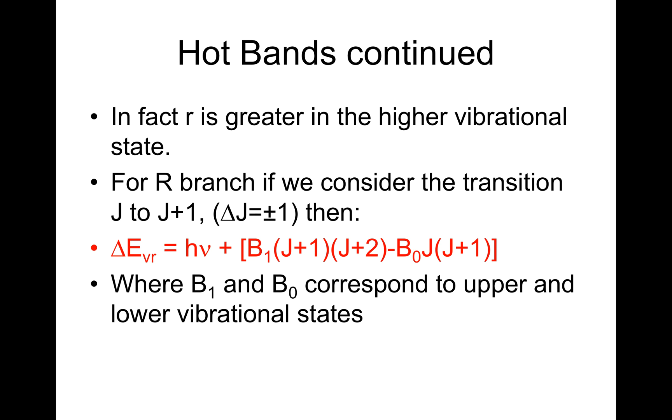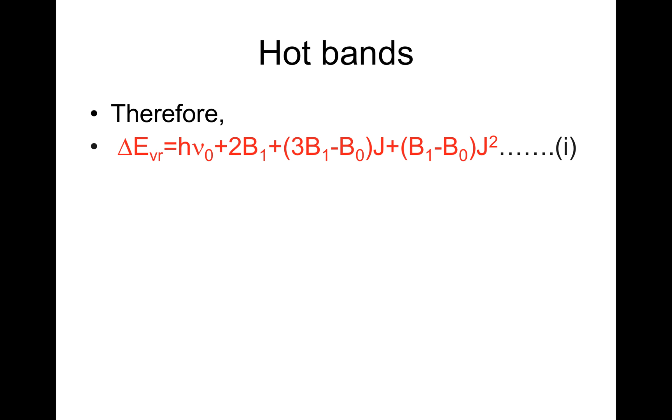Where B1 and B0 correspond to upper and lower vibrational states. Therefore, delta EVR is equal to H nu naught plus 2B1 plus 3B1 minus B0 into J plus B1 minus B0 into J squared. Call that equation I.